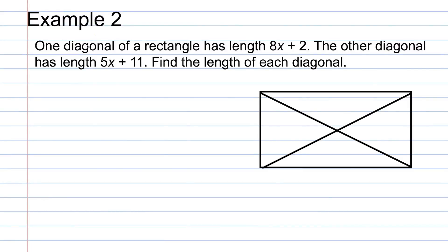In Example 2, we're going to apply the theorem that the diagonals of a rectangle are congruent. One diagonal of a rectangle has a length of 8X plus 2, and the other diagonal has a length of 5X plus 11. Find the length of each diagonal. We know one length is 8X plus 2 and the other is 5X plus 11. We set those two things equal to make our equation: 8X plus 2 equals 5X plus 11.